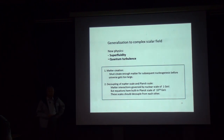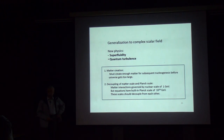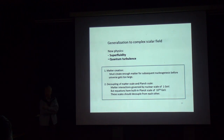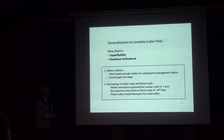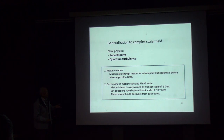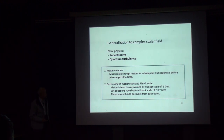We need superfluidity and quantum turbulence to explain two things. First, how matter was created: we must create enough matter for subsequent nucleosynthesis before the universe grows too large. The idea is that matter was all created when the universe was very small — smaller than a certain scale — so that it was very uniform, and after that no more creation. Second, decoupling: matter interactions are governed by the QCD scale of 1 GeV, but the equations have a built-in Planck scale of 10 to the 18 GeV; these two scales must decouple from each other.